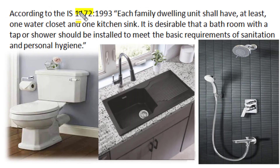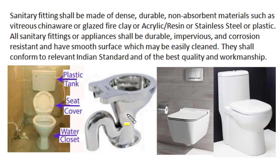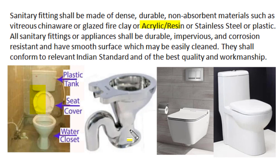According to Indian Standard IS 1172 of 1993, each family dwelling unit shall have at least one water closet (WC) and one kitchen sink. It is also desirable that a bathroom have a wash basin with a tap for cleaning hands and face, and a shower or bathing arrangement to meet the basic requirement of sanitation and personal hygiene. Sanitary fittings are made of dense, durable, non-absorbent materials such as vitreous chinaware, glazed ceramic, fire clay, acrylic, resins, stainless steel, or plastic.